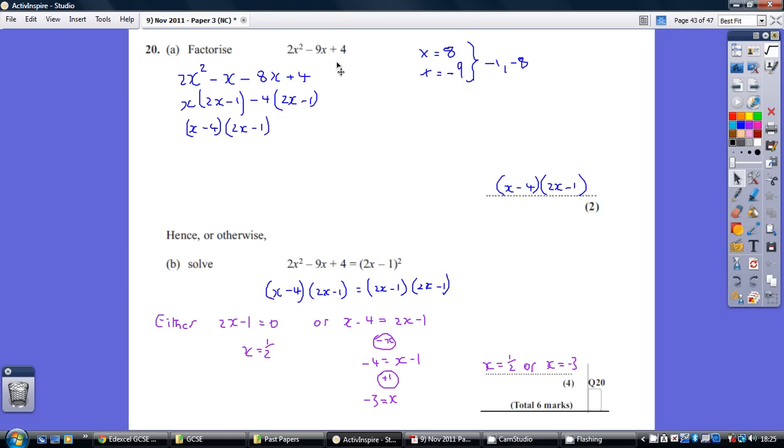we then split this middle term into a minus 1 and minus 8, it doesn't matter which way around. So the first and the fourth terms remain the same, but we split the middle term, I've gone minus x then minus 8x.